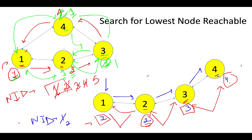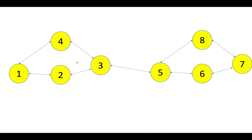The crux here is: whenever you see different lowest IDs allocated to two nodes when backtracking after DFS traversal, you can say that particular edge is acting as a critical connection. If they are equal, that edge is not a critical connection. Now let's apply this algorithm to a bigger example so you get a solid hold of the concept.